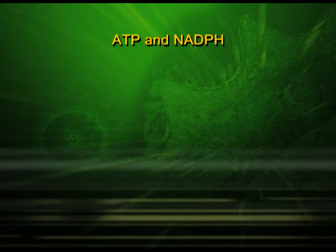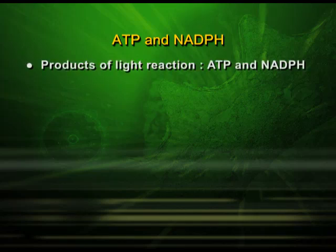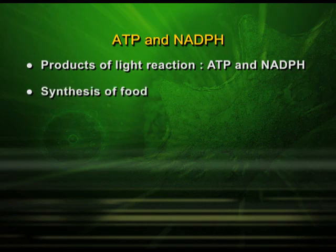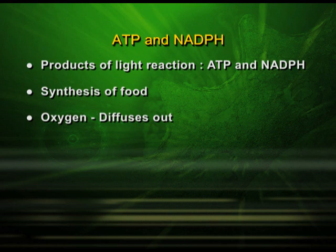Now we will see what is happening in the dark reaction. We have already discussed the light reaction in previous episodes. We know about ATP and NADPH — these are the products of light reaction. Please remember the production of ATP and NADPH are products of light reaction. Moving forward with this: it will result in the synthesis of food and also the release of oxygen. This is a biosynthetic pathway.